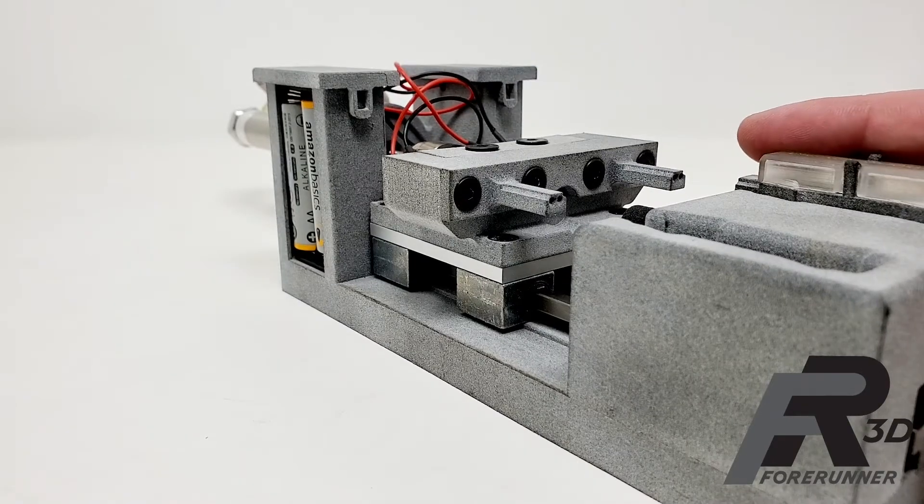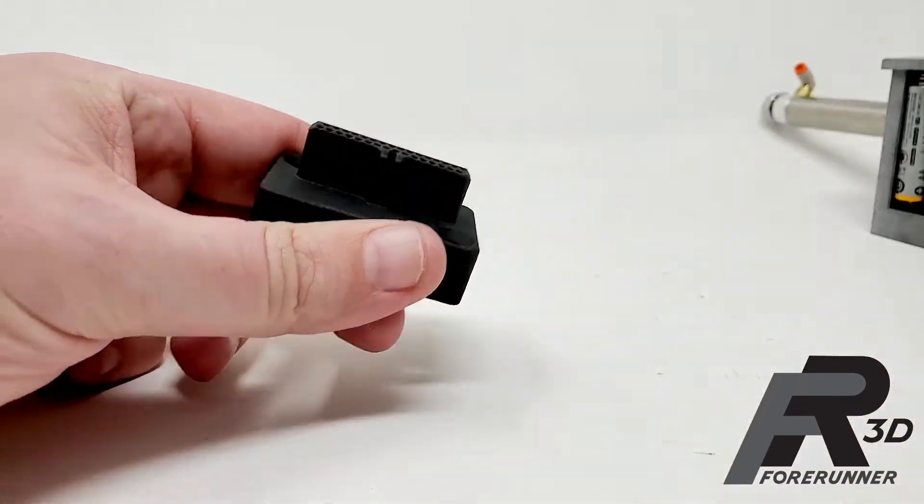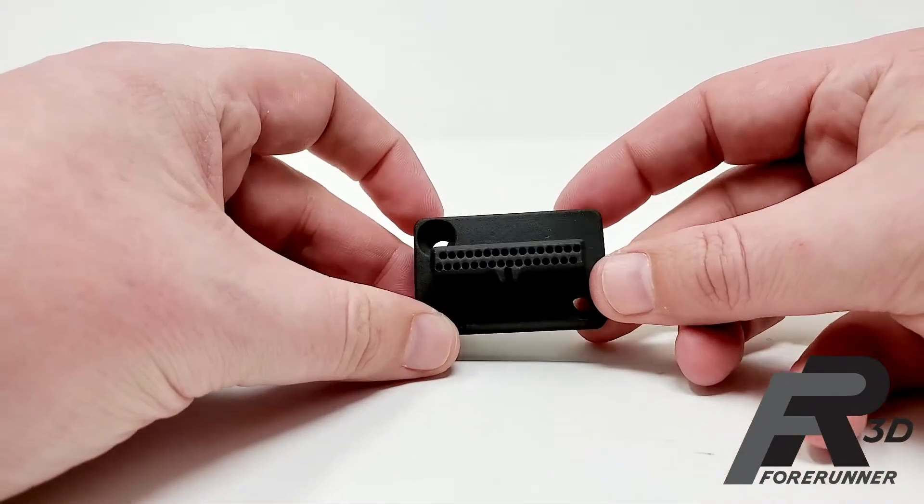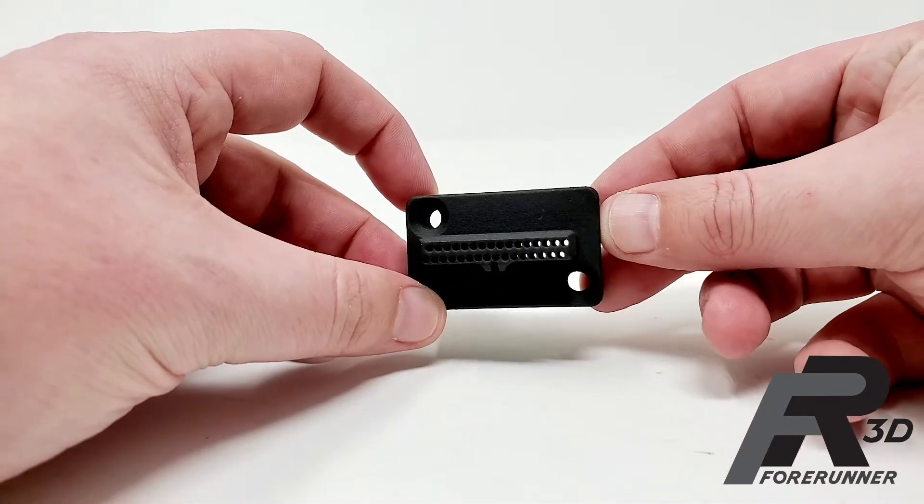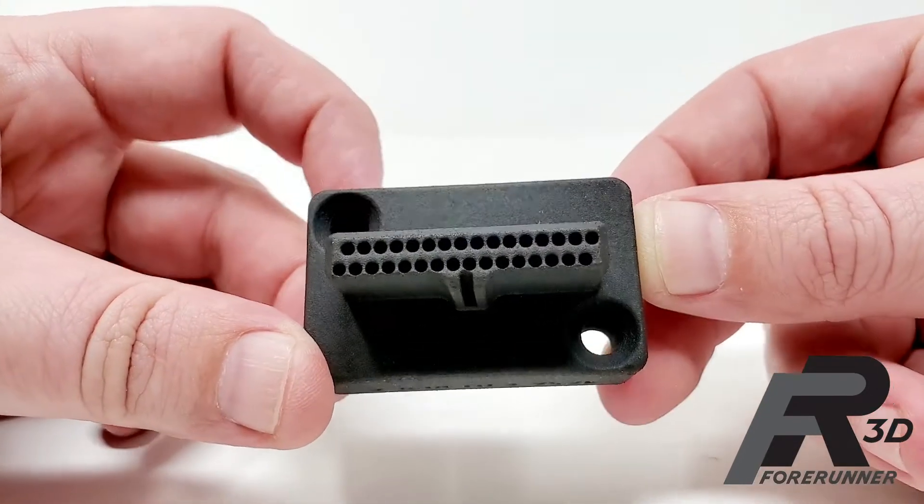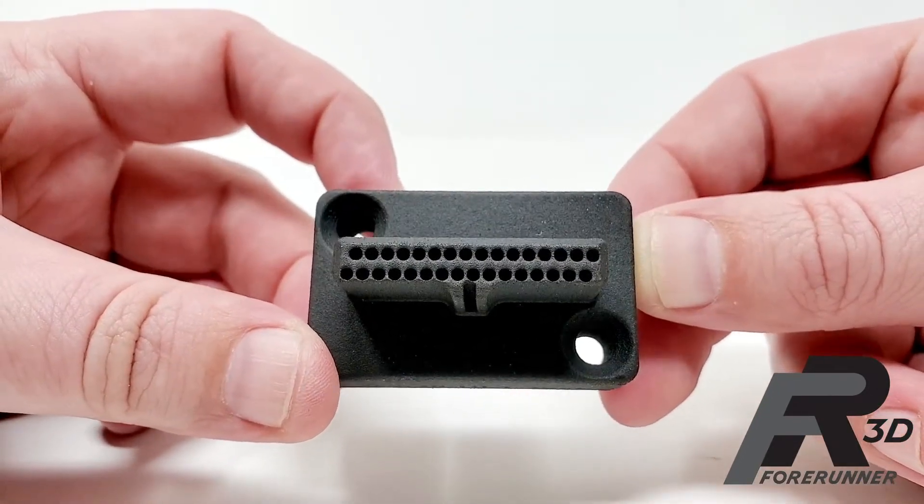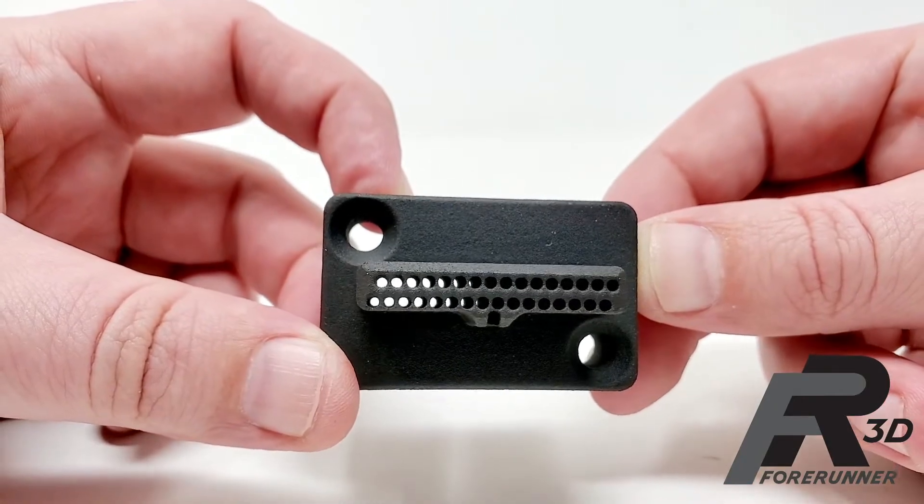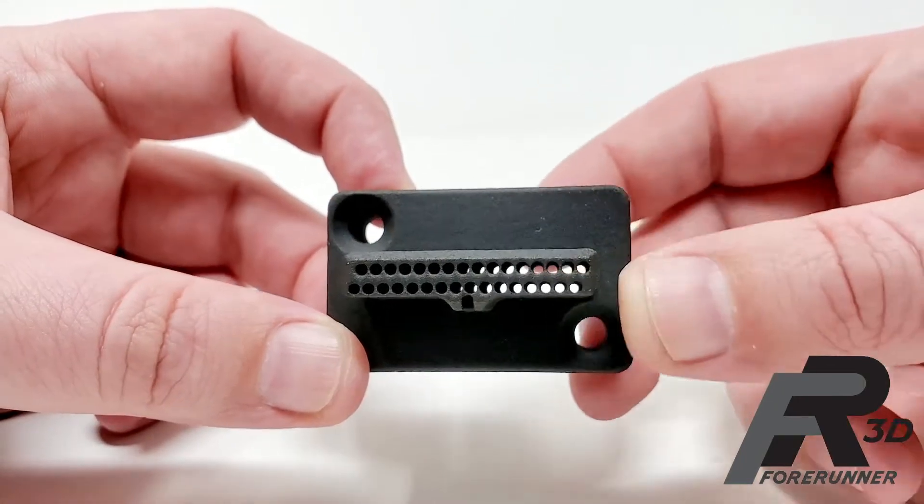Another example of one of these parts would be something like this right here. This is one that I really like because you can see, I mean look at all those frickin holes in there and look at how thin the walls get. I mean we're talking very, very, very thin walls.